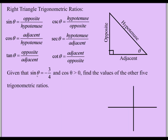Here we're given that sine theta equals -3/4 and cosine theta is greater than 0, and we want to find the other five trigonometric ratios. Since cosine theta is positive, and cosine uses the adjacent (x value), cosine is positive in the first and fourth quadrants. Since sine theta is -3/4, and the hypotenuse is never negative, the negative sign goes on the 3, meaning y is negative. So we're in quadrant IV.